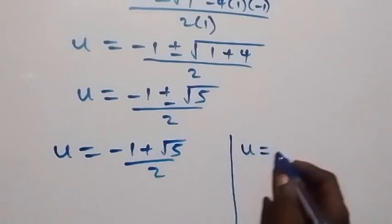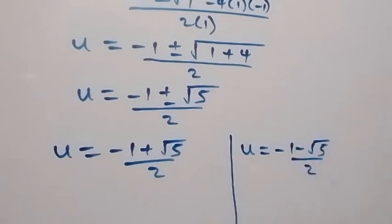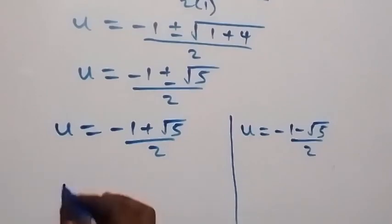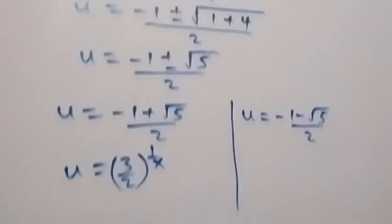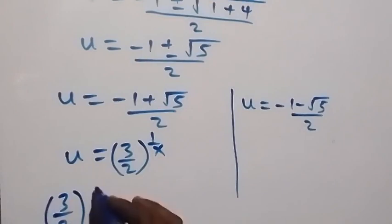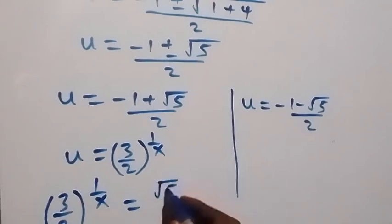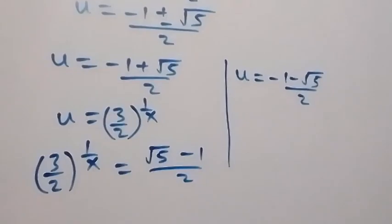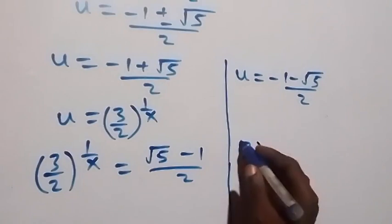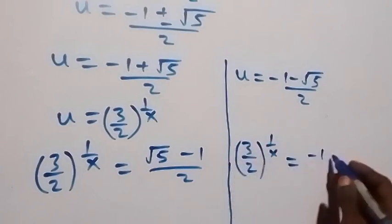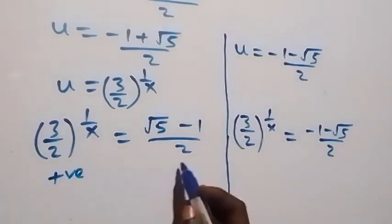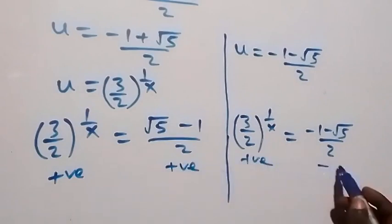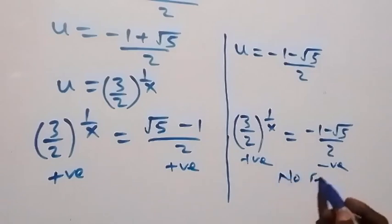We have two solutions: u equals (negative 1 minus root 5) over 2, and u equals (negative 1 plus root 5) over 2. Recalling that u was represented as (3 over 2) raised to power 1 over x, the left-hand side gives a positive number. The first solution is negative, so there is no solution on that side. We take u equals (negative 1 plus root 5) over 2.